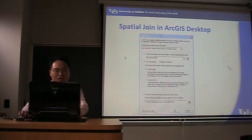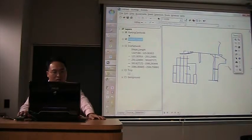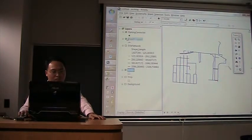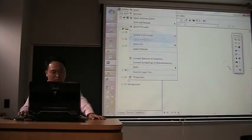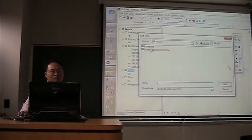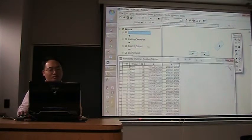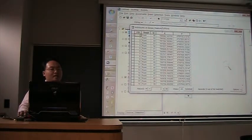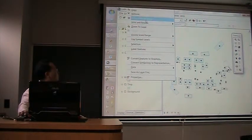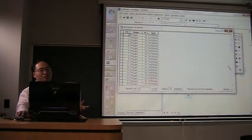We can do spatial joins in ArcGIS desktop. Let me demonstrate that very quickly. We are talking about two layers. One layer is zones, and the other layer is called zone centroids. If we open the attribute table of this layer, we see it only has X and Y information. But this layer has some other information we need, which is the type. So we want to add a type to that layer.